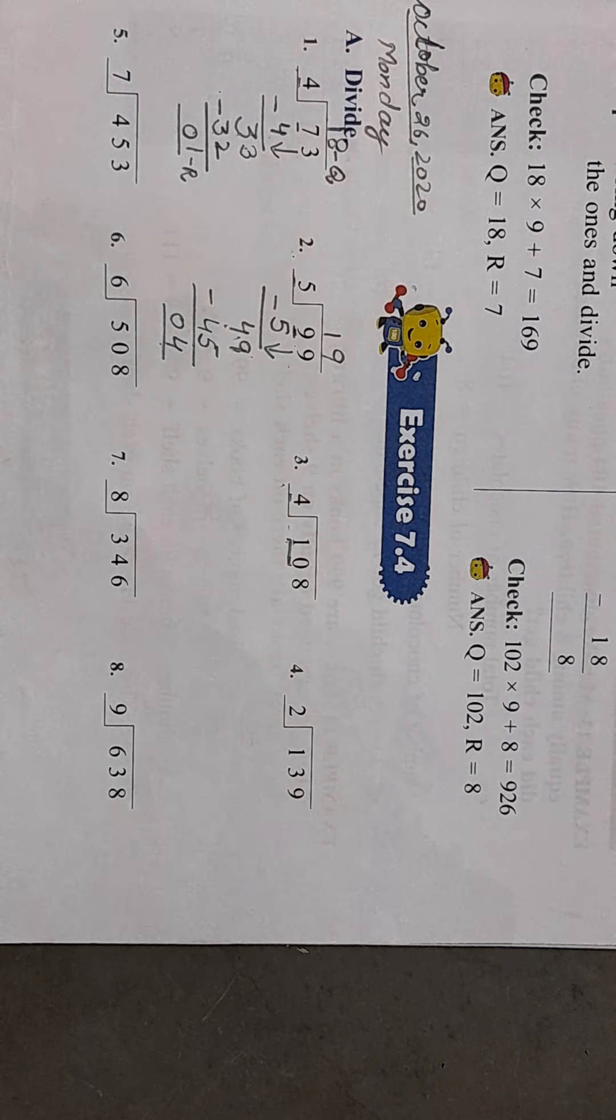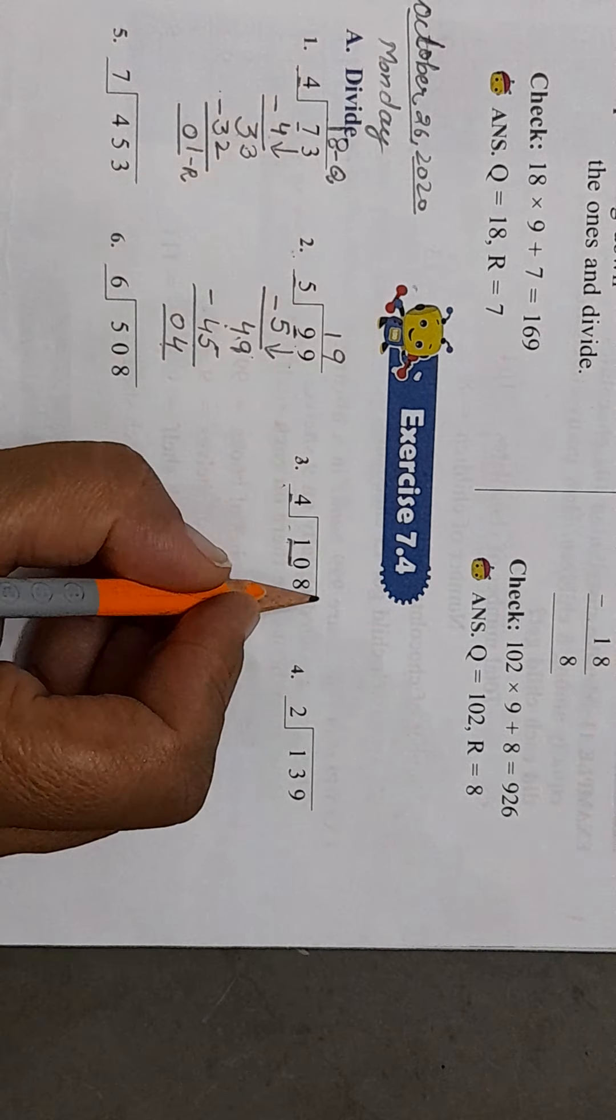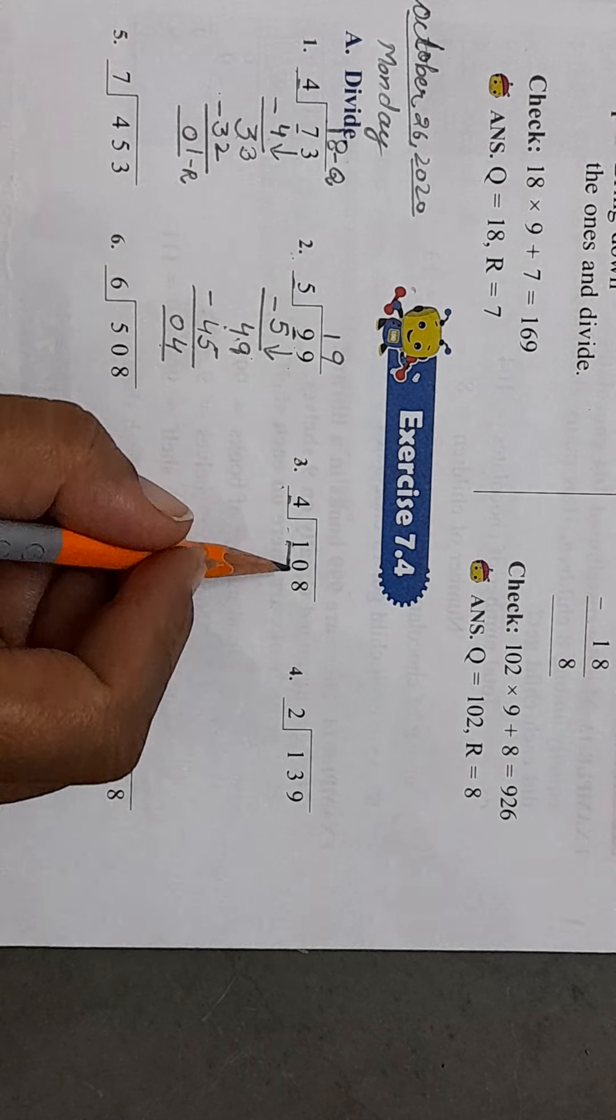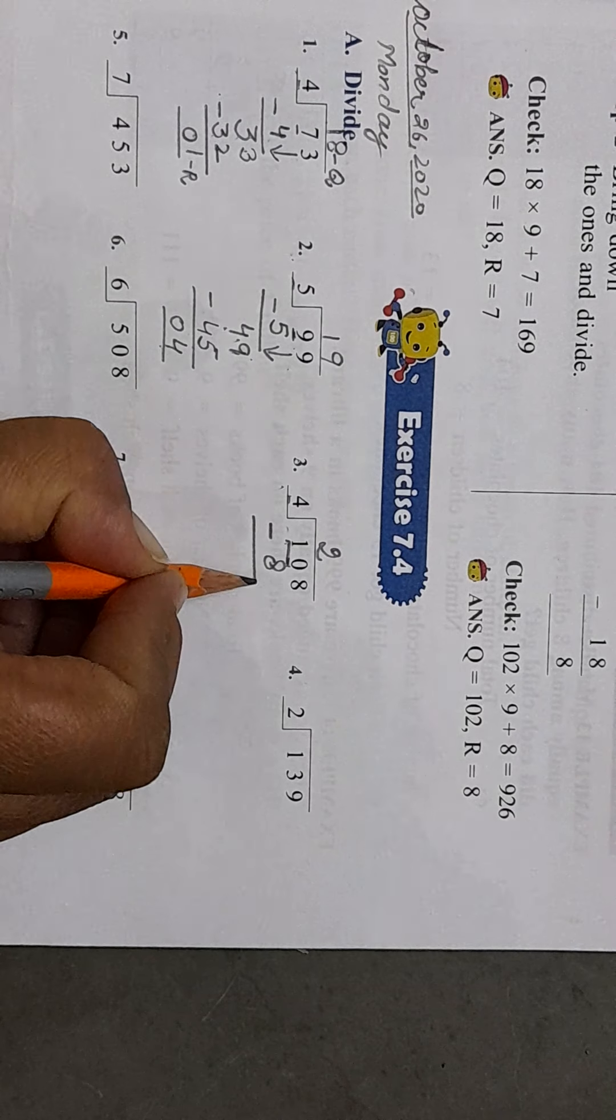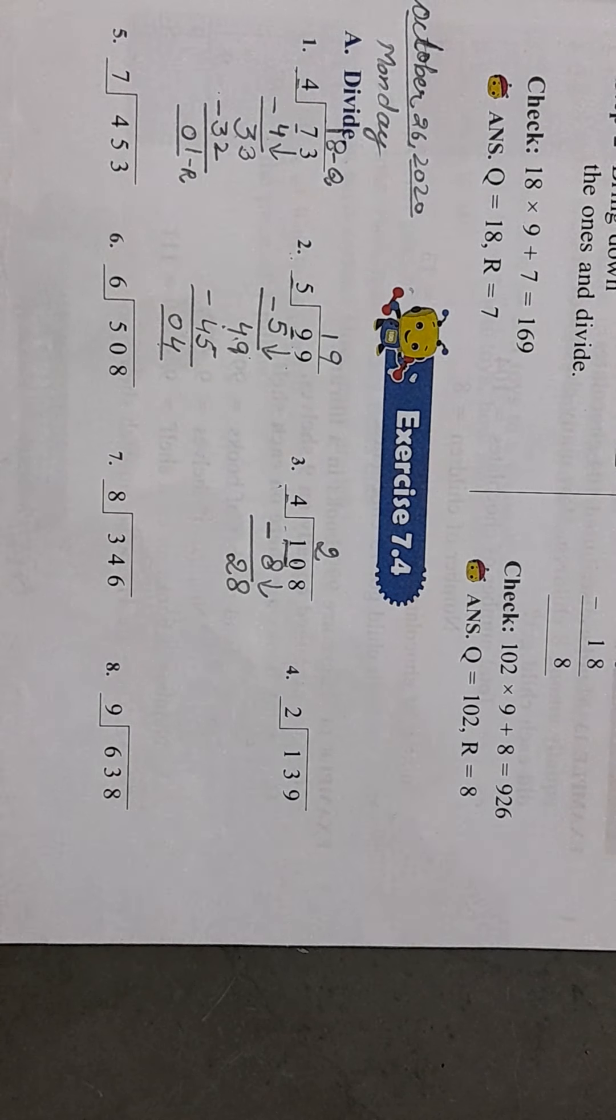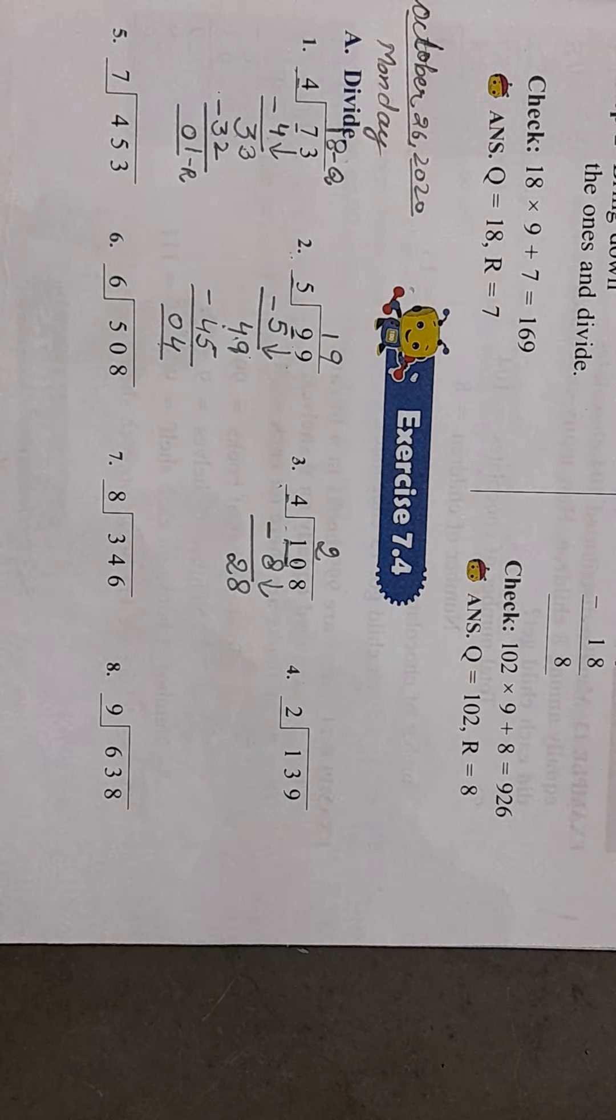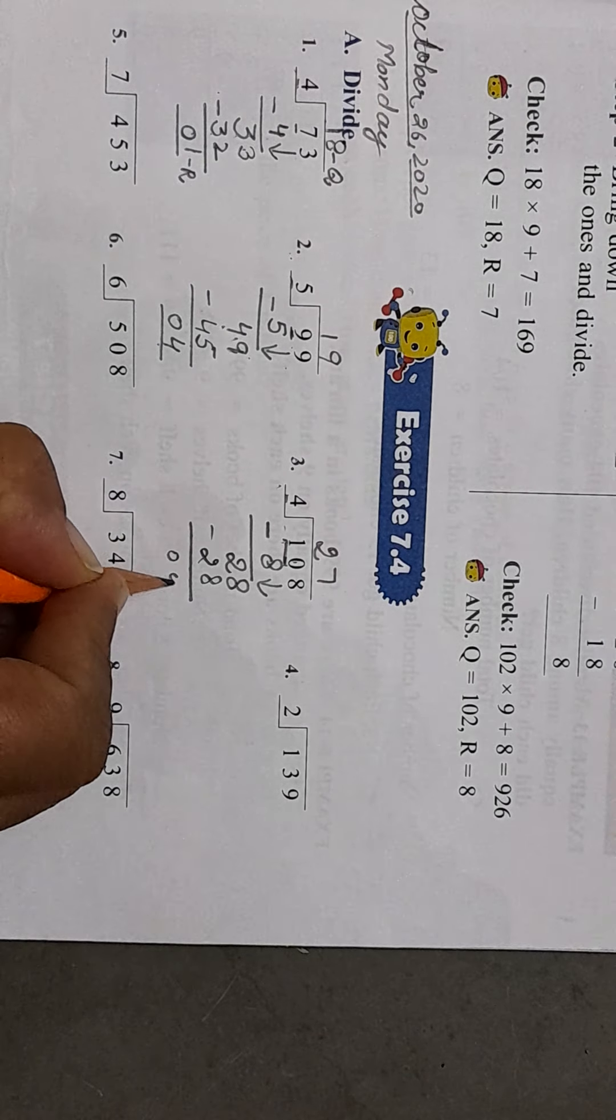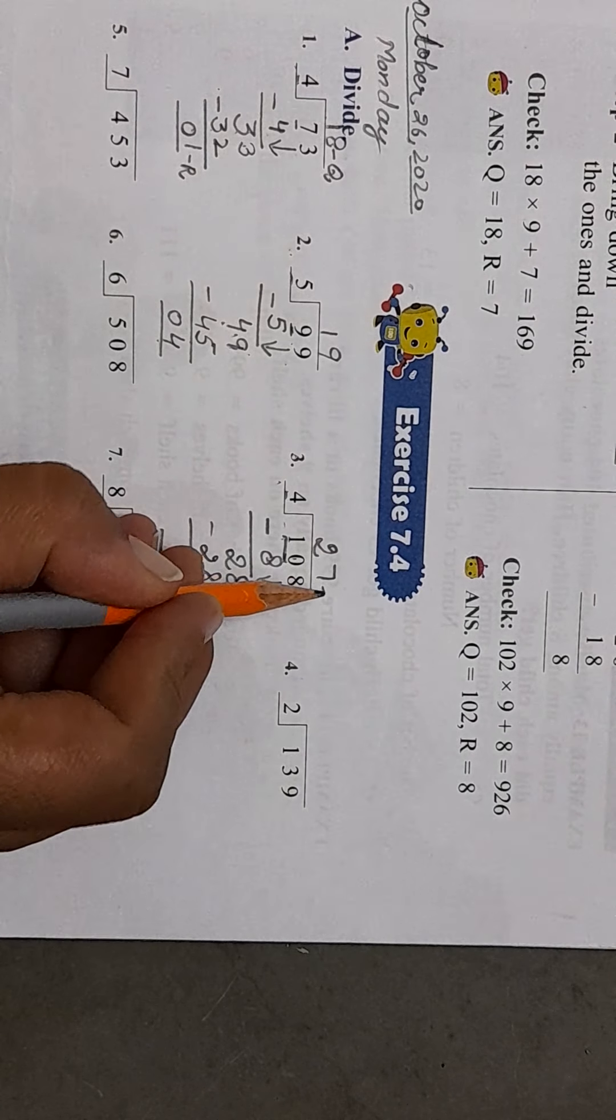Now check, does 10 come in the table of 4? No. So we will find that number which is less than 10 but comes in the table of 4. 10 is less than 9, but 9 doesn't come in 4's table, so we go to 8, and 8 comes at 2. So 4 twos are 8. Now 10 minus 8 is 2. We bring down the 8 here. Does 28 come in the table of 4? Let's read this table: 4 ones are 4, 4 twos are 8, 4 threes are 12, 4 fours are 16, 4 fives are 20, 4 sixes are 24, 4 sevens are 28. Yes, it's 4 sevens are 28. Remainder is 0 and the quotient is 27.